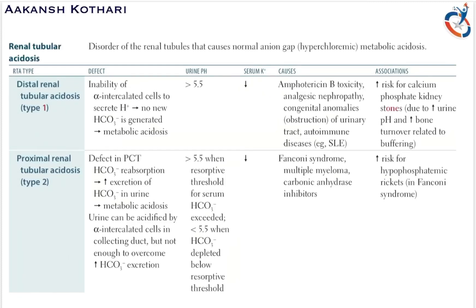The primary causes of the defect in the alpha intercalated cells include amphotericin B toxicity, analgesic nephropathy, congenital anomalies such as obstruction of the urinary tract, and autoimmune diseases like systemic lupus erythematosus (SLE).